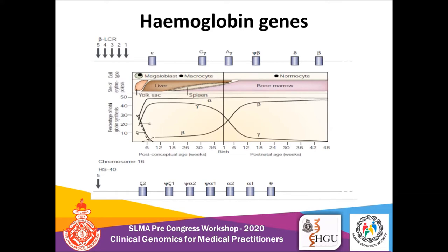This is the time when beta thalassemia major is manifested, because there is no effective production of beta globins, resulting in no haemoglobin A being produced. Other things to remember: not only these globin genes within the cluster, but close to each cluster there are also regulatory genes located. For the cluster on chromosome 11, several regulatory genes are located upstream — these are known as the beta LCR genes. Similarly, for the cluster on chromosome 16, there is one regulatory element also located upstream.